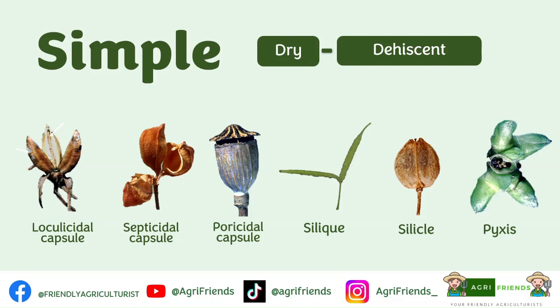For the poricidal capsule, this capsule has pores or openings with round holes. Poricidal capsules have long stalks, and the wind causes the capsules to sway back and forth, producing a shaking mechanism. That shaking aids the dispersal of seeds through the pores. An example of this is the poppy.